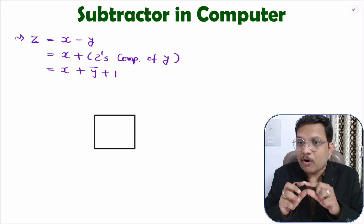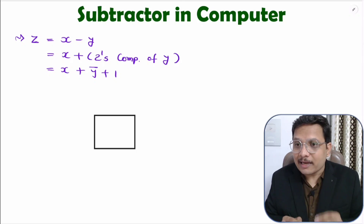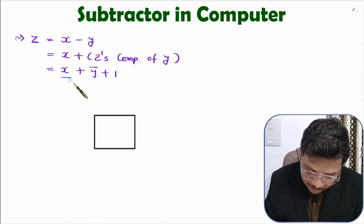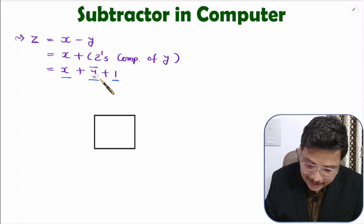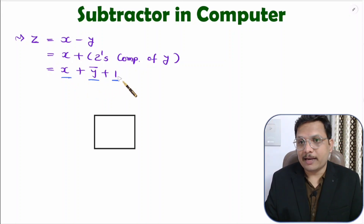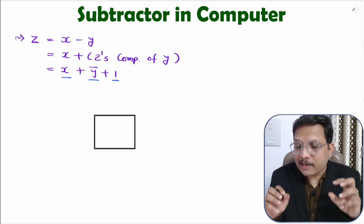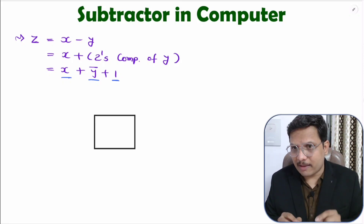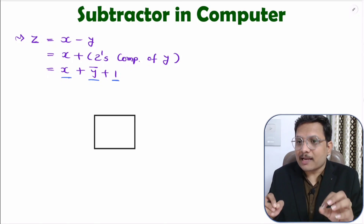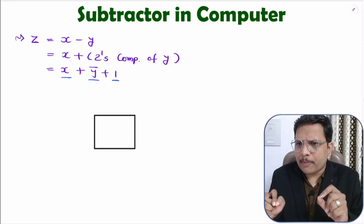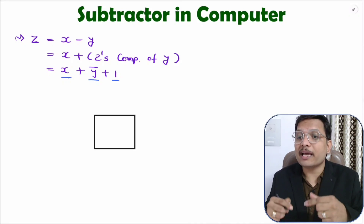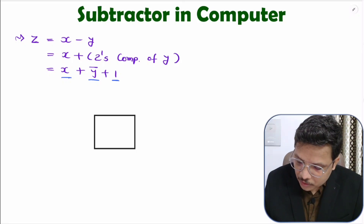Now, in this modulo-2 addition, how many bits are we adding? We are adding three different bits: one is x, second is y-bar, and third is one. That is how we are performing addition of three different bits. Now I'll explain one basic property of the XOR gate, and by using that property we can implement the subtraction operation. You must know how the truth table of an XOR gate works.